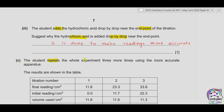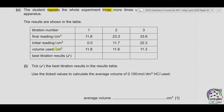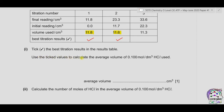Part C. The student repeats the whole experiment three more times using more accurate apparatus. From the new results table, the two closest values are selected as the best titration results. The average volume of 0.1 mol/dm³ HCl used is calculated by adding the two best results and dividing by two, giving 11.7 cm³.